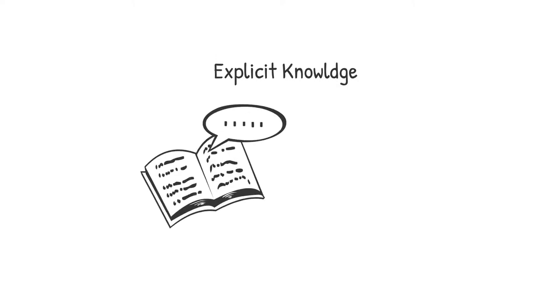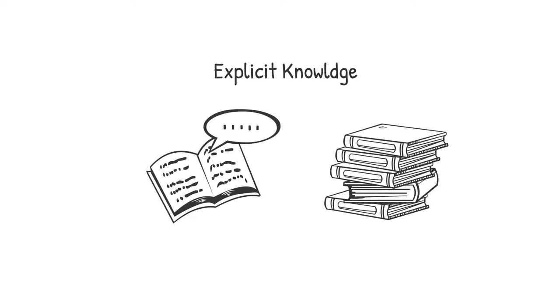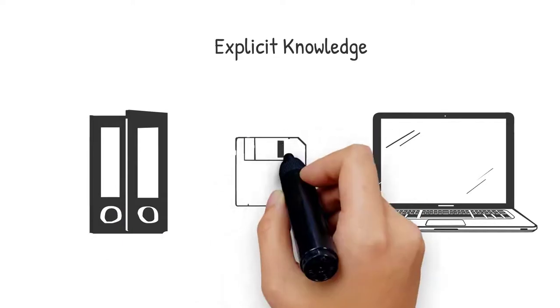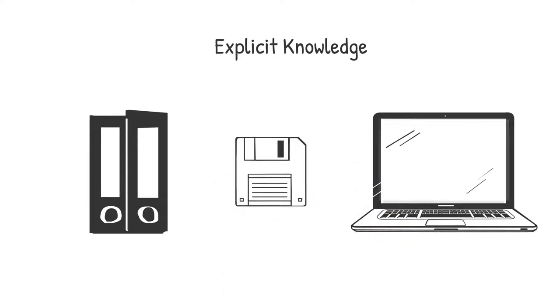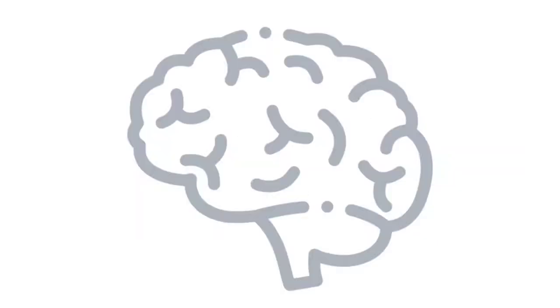Explicit knowledge is clearly communicated by means of signs, that is, spoken and written language. This explicit knowledge can be coded, that is, translated into signs and then stored, processed and transmitted by any media.